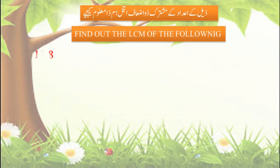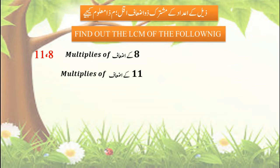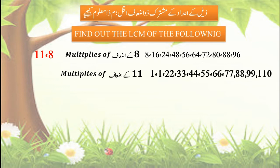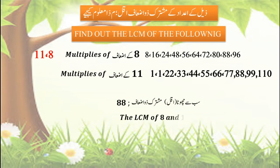Next: find the LCM of 8 and 11. The multiples of 8 and the multiples of 11 are listed. Observing both rows, the least common multiple is 88. So the LCM of 8 and 11 is 88. Remember this.